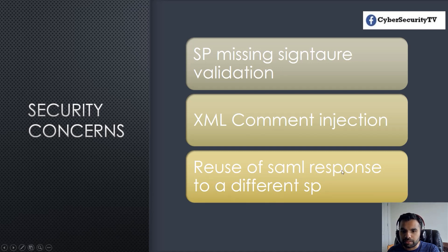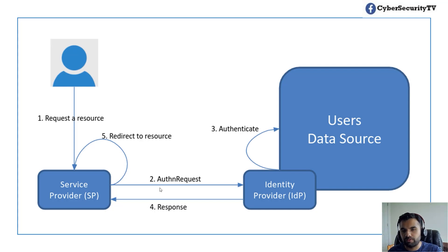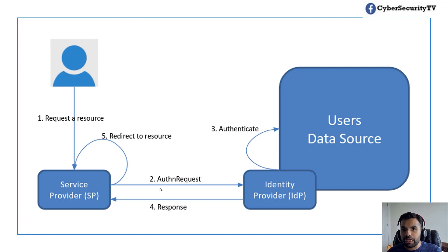The third risk is reuse of the SAML response to a different SP. I can take the response where the identity provider signed an assertion saying the user is good and this assertion is for abc.com. I intercept the response, change abc.com to xyz.com, go to xyz.com and say I got this from the IDP — let me in. And xyz.com lets me in because they didn't verify the assertion was made for ABC and not xyz. I might be authenticated for ABC but not xyz. This is why the one-to-many relationship is important to understand.